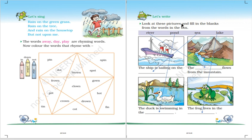Now Let's Write. You have to look at the pictures and fill in the blanks from the word box. The ship is sailing on the sea. The river flows from the mountain. The duck is swimming in the pond. And the frog lives in the lake. You can write here pond or lake also. You can change it. Both are right.